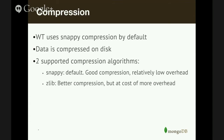With the WiredTiger storage engine you also get compression on disk by default. Disk space is reasonably cheap but not so cheap you don't care about how much space your data takes up. By default WiredTiger uses a compression algorithm called Snappy, which gives you good compression without utilizing too much CPU. If you're more concerned with getting better compression, there's also Zlib — better compression but at the cost of additional CPU utilization.